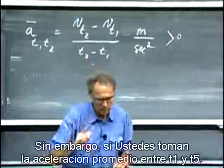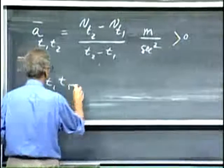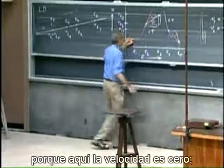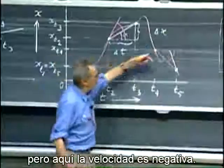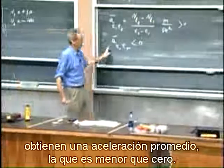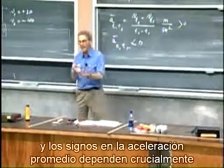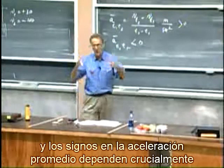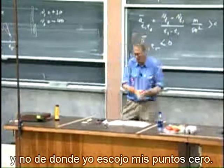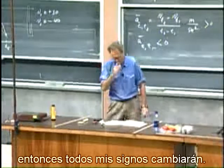Look at the angle. However, if you take the average acceleration between t1 and t5, that is smaller than zero, because here the velocity is zero but there the velocity is negative. So if you substitute that in, you get an average acceleration which is smaller than zero. The signs in velocity and average acceleration depend crucially on how I have defined my increasing value of x — not where I choose my zero point. If I reverse the direction of increasing x, then all my signs will change.